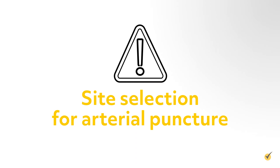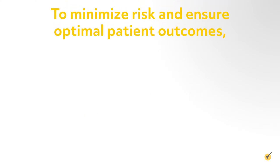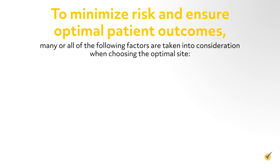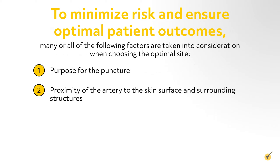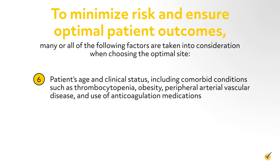Site selection for arterial puncture is extremely important and should be determined in advance. To minimize risk and ensure optimal patient outcomes, many or all of the following factors are taken into consideration when choosing the optimal site: purpose for the puncture, proximity of the artery to the skin surface and surrounding structures, ability to locate the artery, ease of access, size of the artery, and the patient's age and clinical status including comorbid conditions such as thrombocytopenia, obesity, and peripheral arterial vascular disease.